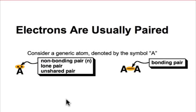Electron pairs may or may not be involved in chemical bonding. For two electrons that are paired but not involved in chemical bonding, we'll represent them as two dots centered on a single atom. We'll call this a non-bonded pair of electrons, a lone pair, or an unshared pair of electrons.